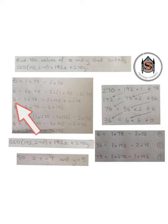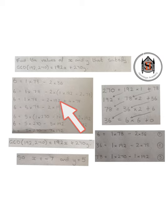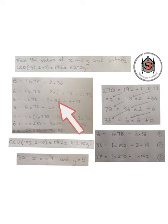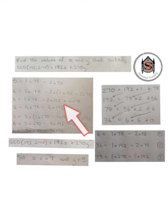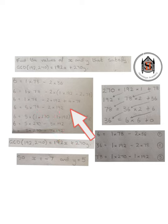Multiplying out gives 6 equals 1 times 78 minus 2 lots of 192. It's important to remember we are multiplying the coefficient, not 192 itself. So we get minus 2 lots of 192 plus 4 lots of 78 — be careful, the two minus signs make a positive. Tidying up: 6 equals 5 lots of 78 minus 2 lots of 192.